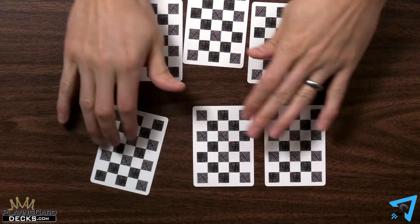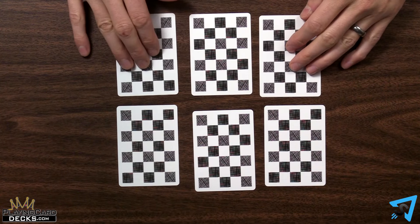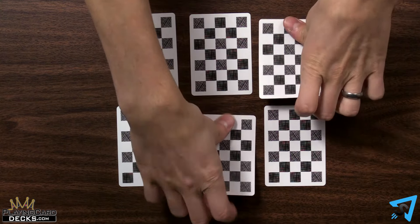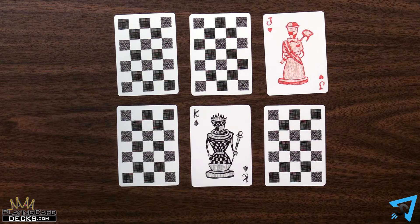Players arrange their face down cards, without looking at them, in a 2x3 grid. Then every player flips over any two of theirs face up.